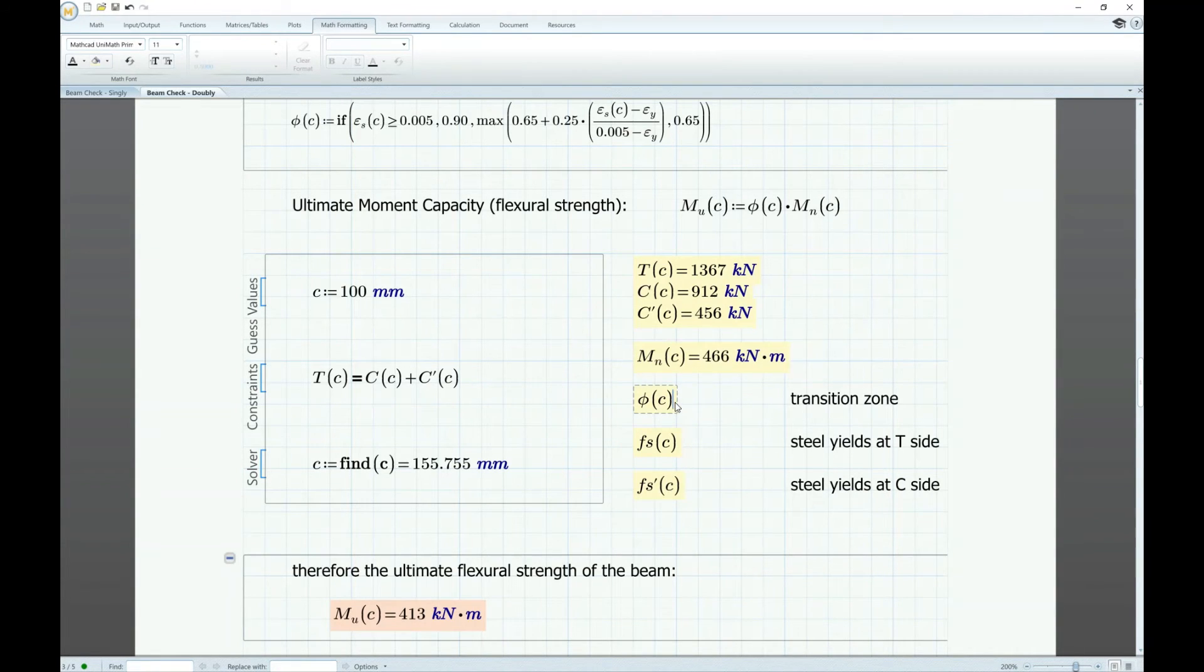You can also ask MathCAD what's the value of the strength reduction factor which is under transition zone because it's 0.887 and the value of our tensile stresses. So based on these values these are greater than the yield strength so the steel yields at tension side and steel also yields at compression side.